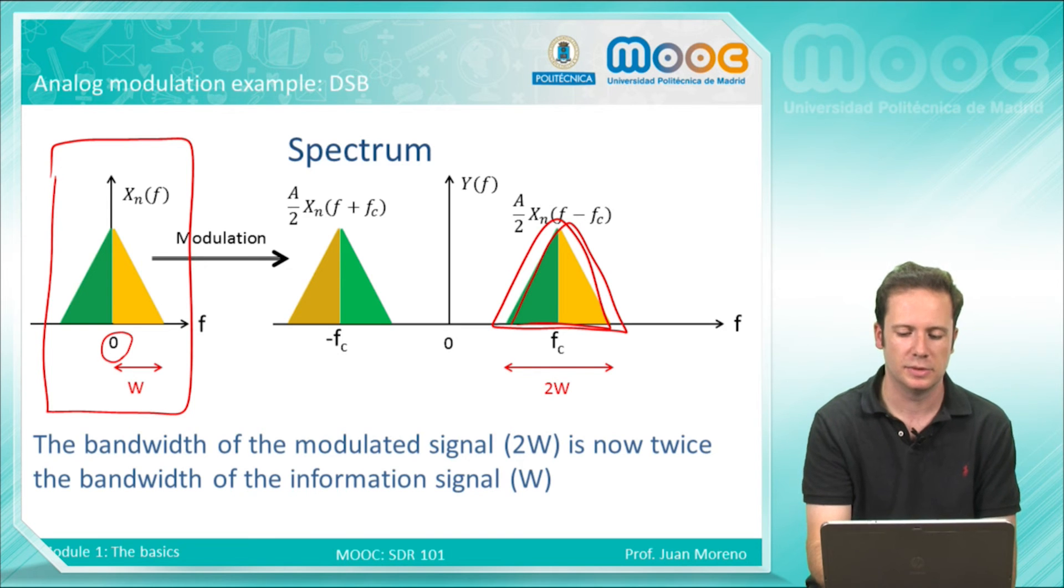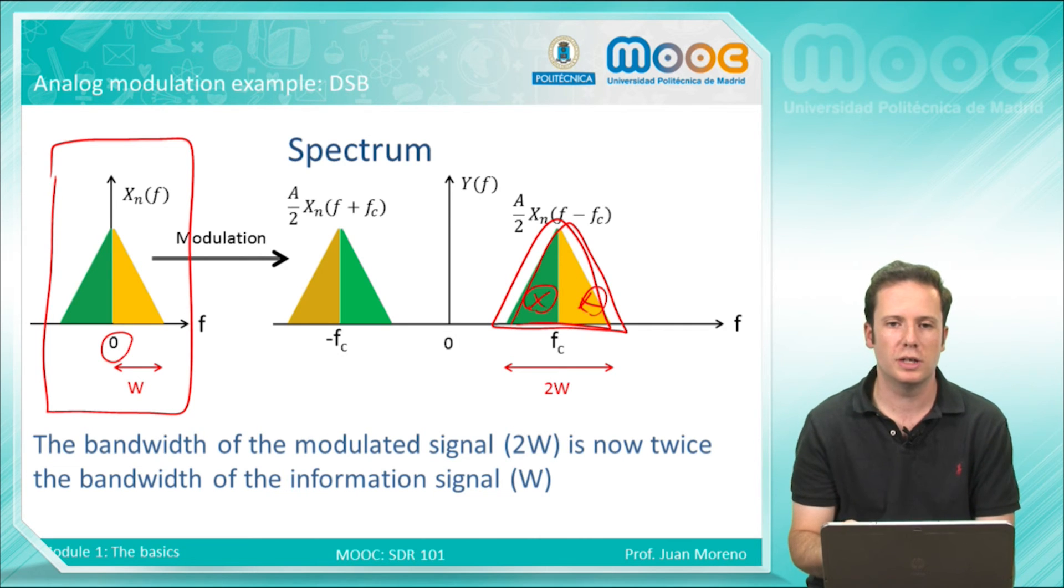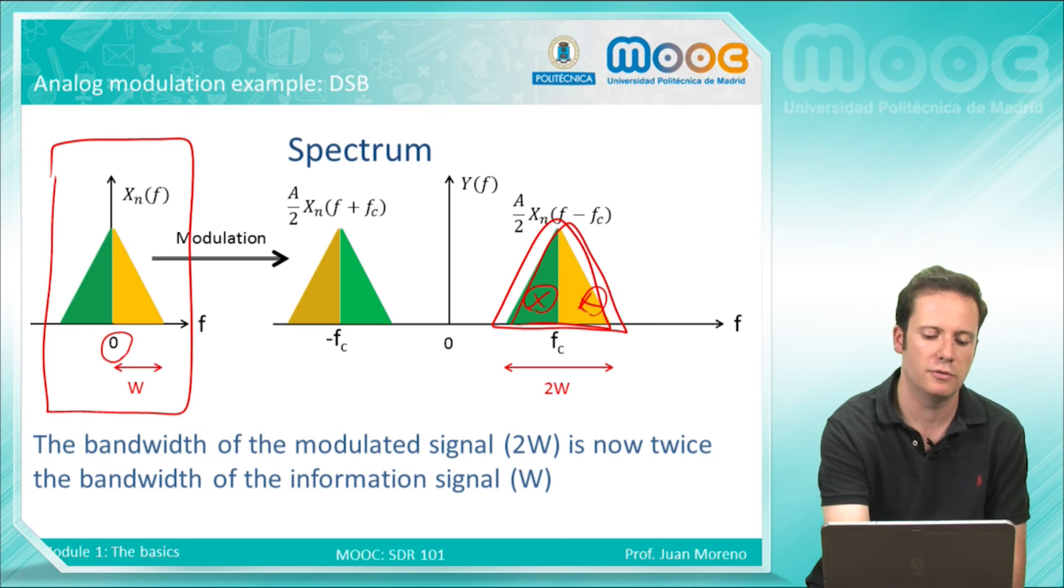We call this modulation double sideband because you will have two bands, the upper one and the lower one. Also look that the bandwidth of the modulated signal now is twice the bandwidth of the information signal.